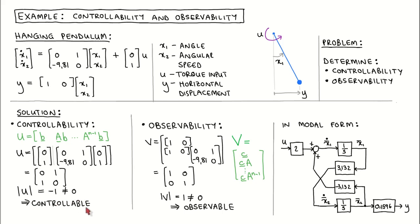Because the plant is controllable, we can place the closed-loop poles anywhere using state feedback. To determine observability, we construct the observability matrix V. The first row is vector C, and the second row is vector C times matrix A. We then calculate the determinant of V, which is 1. Since it is nonzero, the plant is observable.